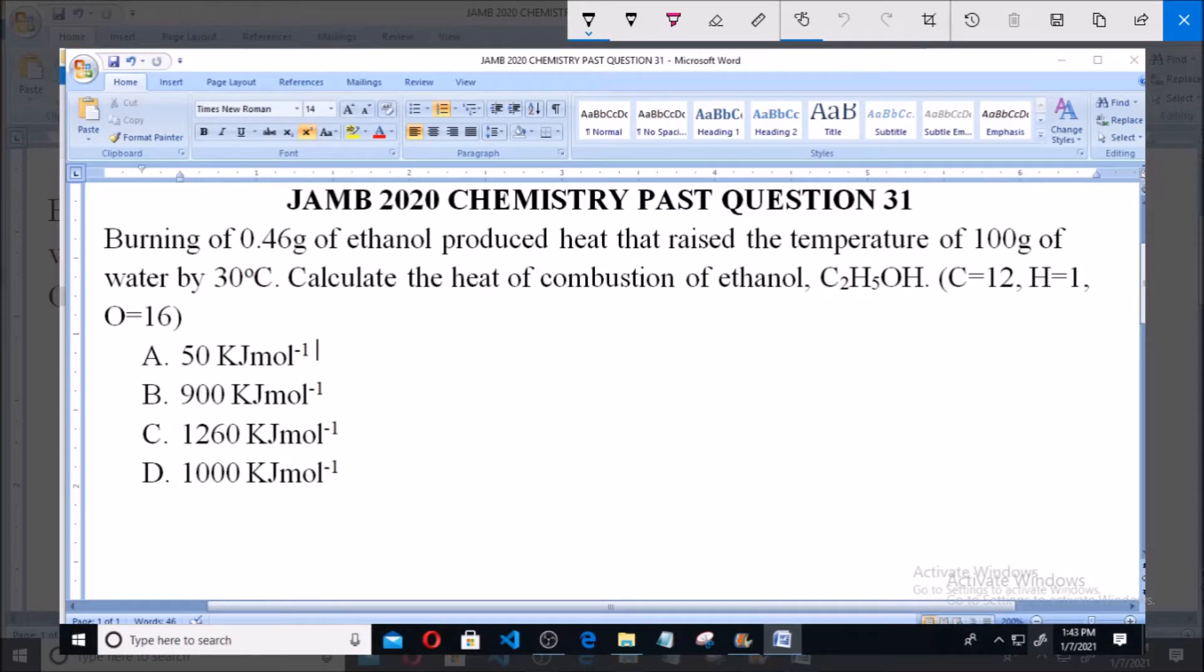Option A says 50 kilojoules per mole, B says 900 kilojoules per mole, C says 1260 kilojoules per mole, and D says 1000 kilojoules per mole.